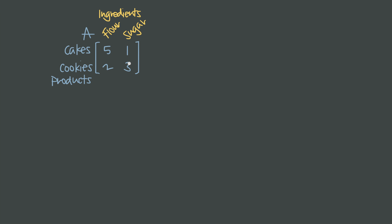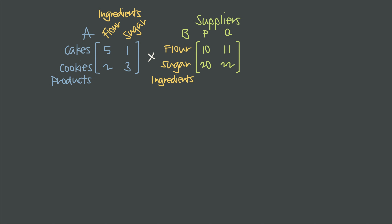Now that's simple enough, but we also have two possible ingredient suppliers that we'll call P and Q, and they charge us different rates for our ingredients. Matrix B can show us that supplier P charges us $0.10 per cup of flour and $0.20 per cup of sugar, and that supplier Q charges us $0.11 per cup of flour and $0.22 per cup of sugar.